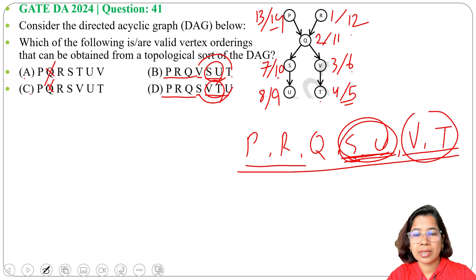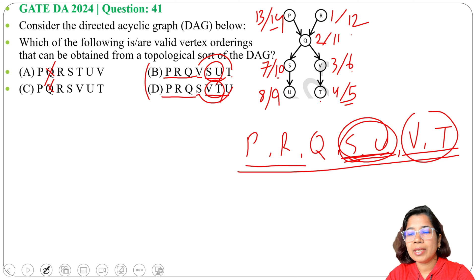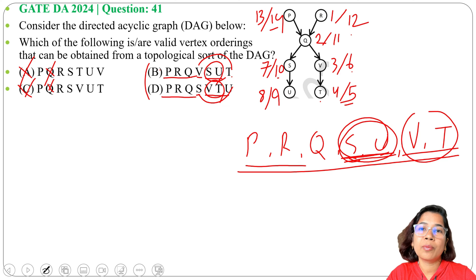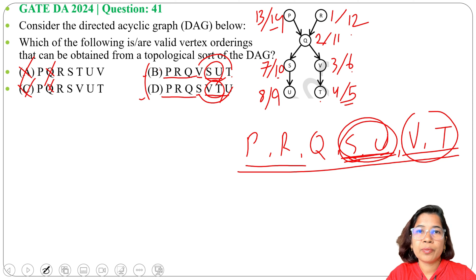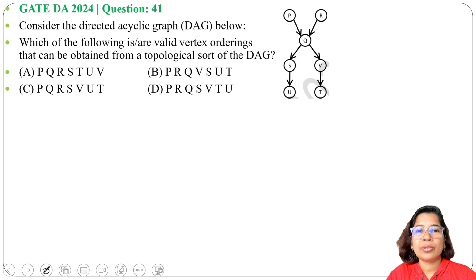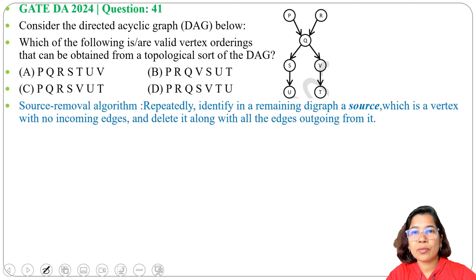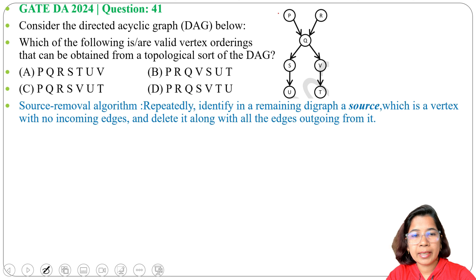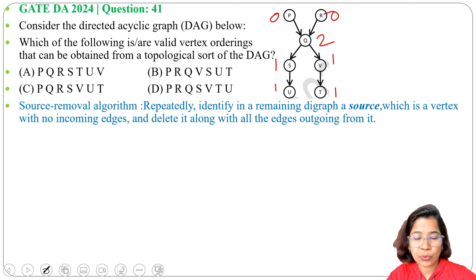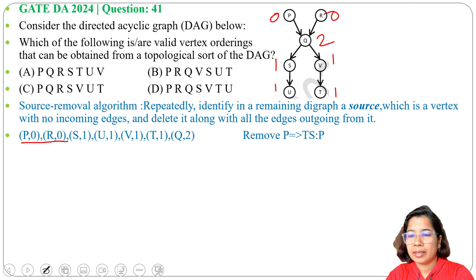According to the options we need to check using the source removal method. Options A and C are not the answer. From options B and D, by DFS method we are not getting the exact matching sequence. In the source removal method, we write all vertices in increasing order of in-degree. P has in-degree zero, R has in-degree zero, S is one, U is one, T is one, V is one, and Q has in-degree two.